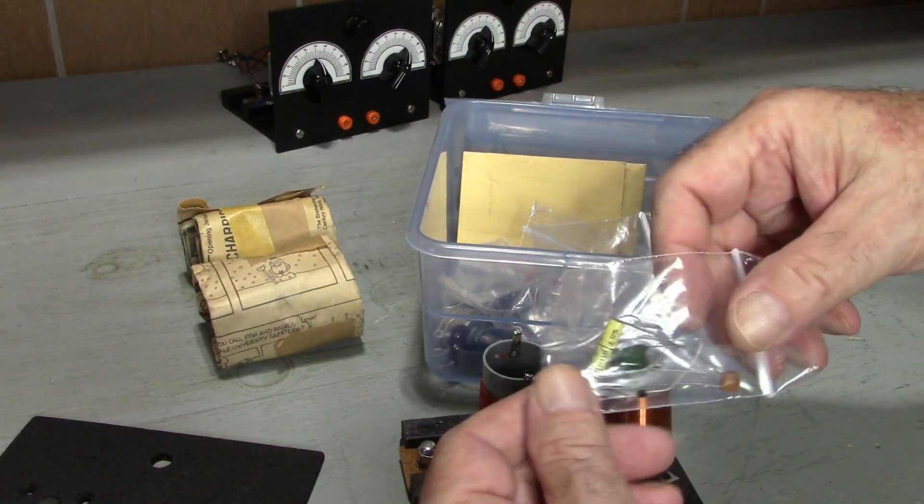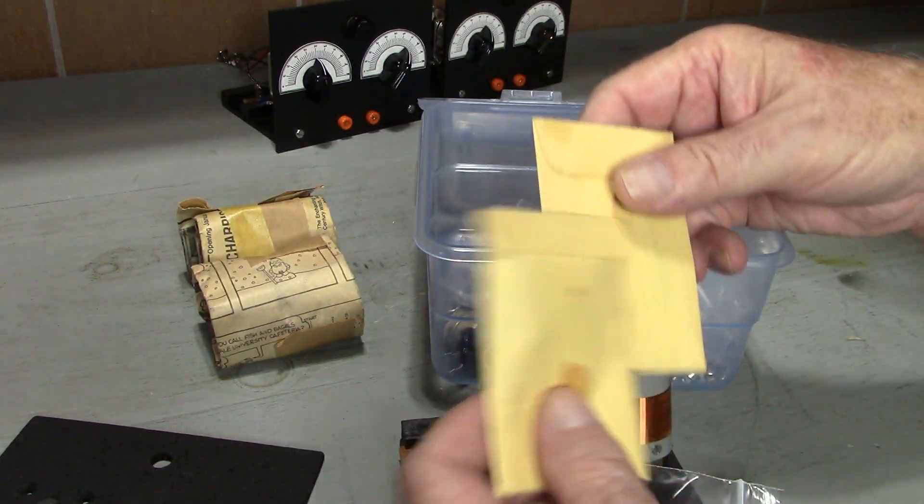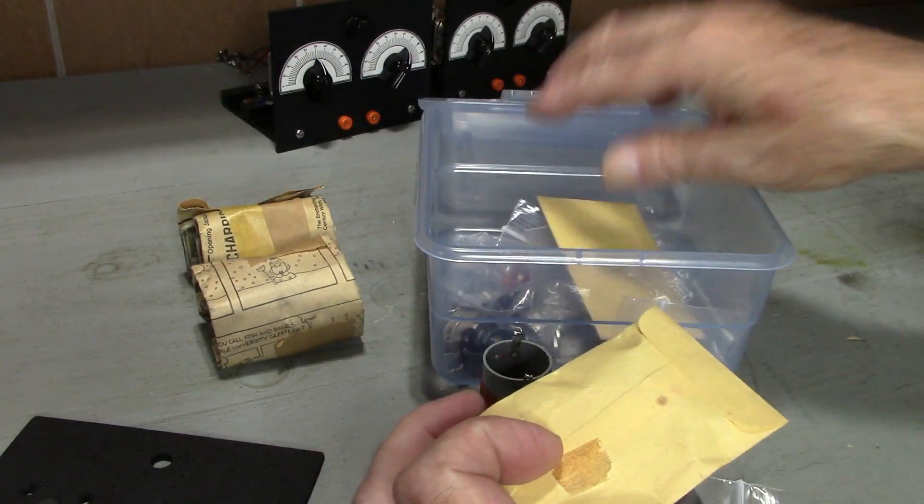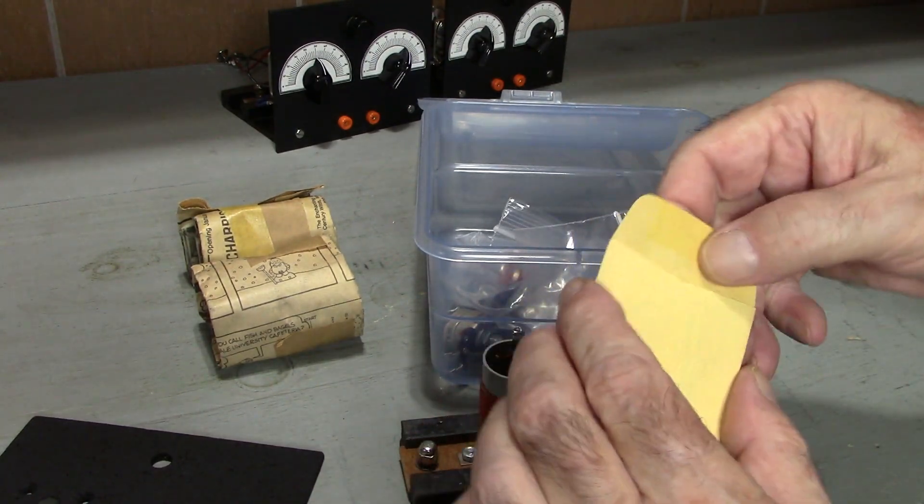Here are some more parts. I don't think Elmer used these Ziploc bags. The previous owner probably put the parts in those bags. These envelopes however are original. This one has the transistor in it and this other one has the dial scales for the front panel.